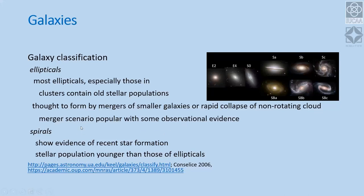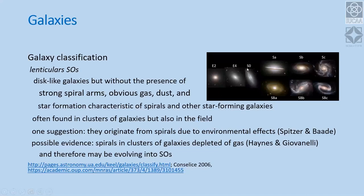As speakers have earlier pointed out, we observe what we see and make the best of it by applying known physics, chemistry, and now even biology to understand our universe. Lenticulars are somewhere in between — they have a structure somewhat like spirals but without very prominent spiral structures, and they have a pretty prominent bulge.